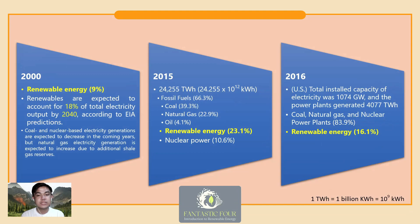This slide shows the timeline for energy use from different sources. In 2000, only 9 percent of electricity came from renewables. US EIA projections indicate renewables will constitute 18 percent of electricity generation by 2040. Coal and nuclear-based electricity generation are expected to decrease in coming years, but natural gas electricity generation is expected to increase due to additional shale gas reserves.